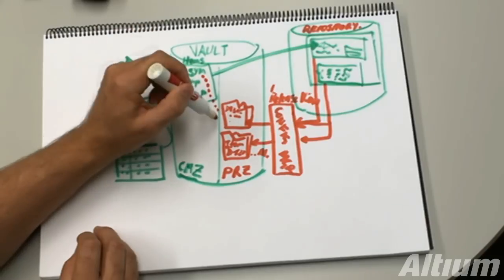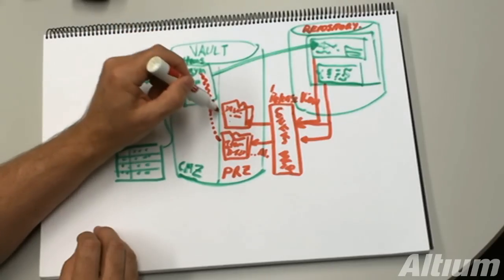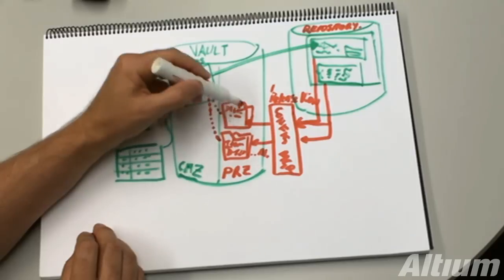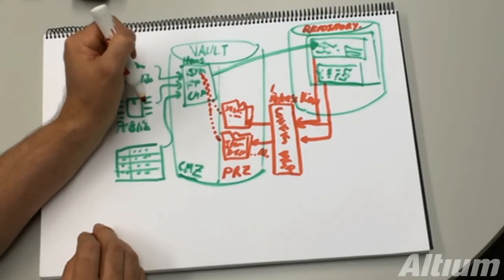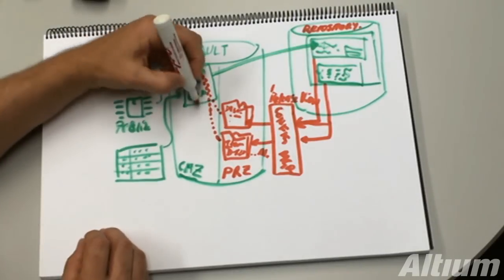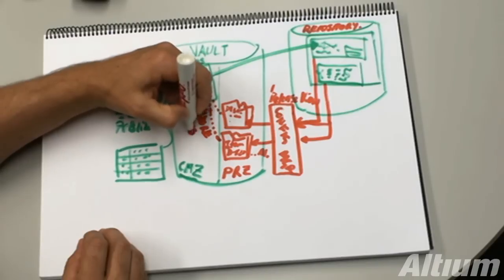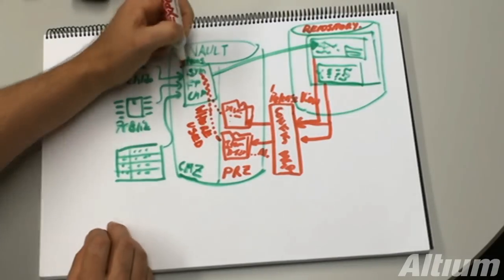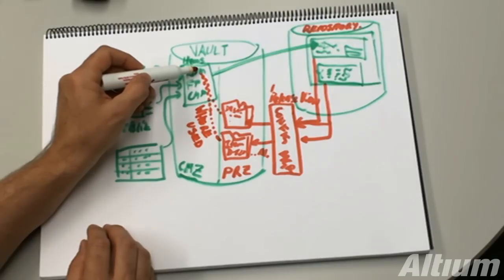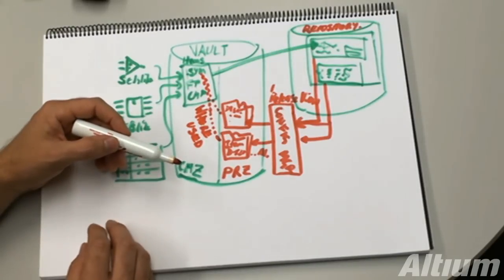So, we now have this relationship between these released designs, or these production releases, and the components in the vault that were used to design those documents. And that gives us where used capability. So, that where used capability appears with a link from items in the vault to other items in the vault after you've done the full design and release cycle.